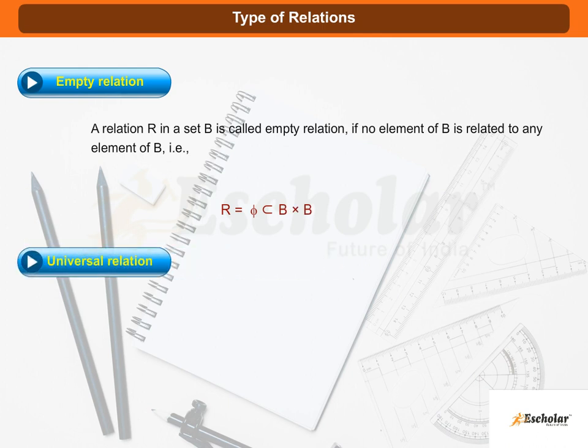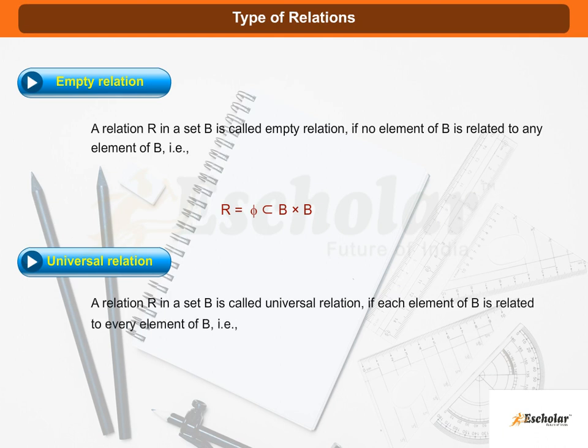Universal relation. A relation R in a set B is called universal relation if each element of B is related to every element of B, i.e., R is equal to the Cartesian product of B and B.